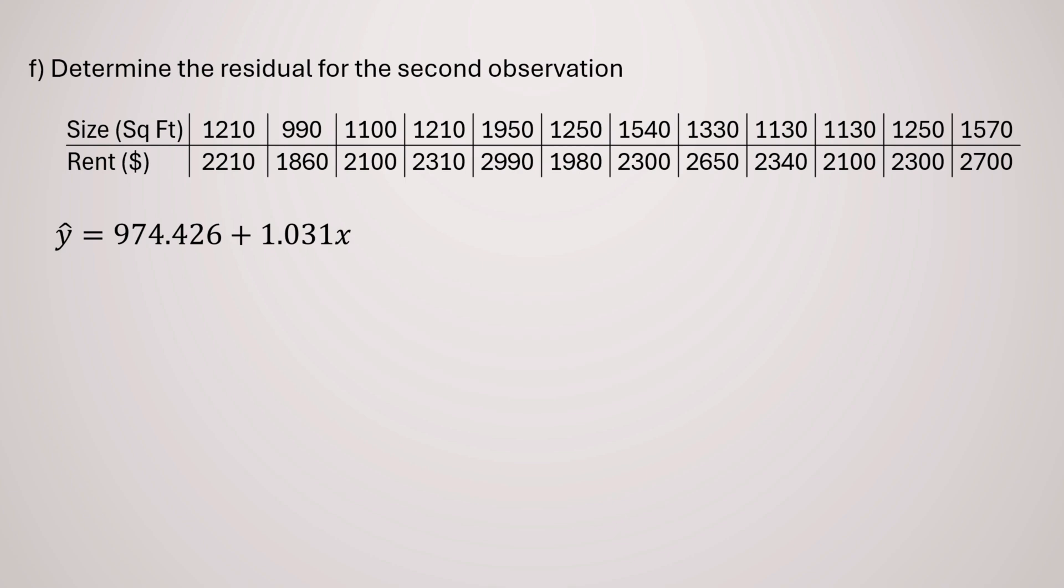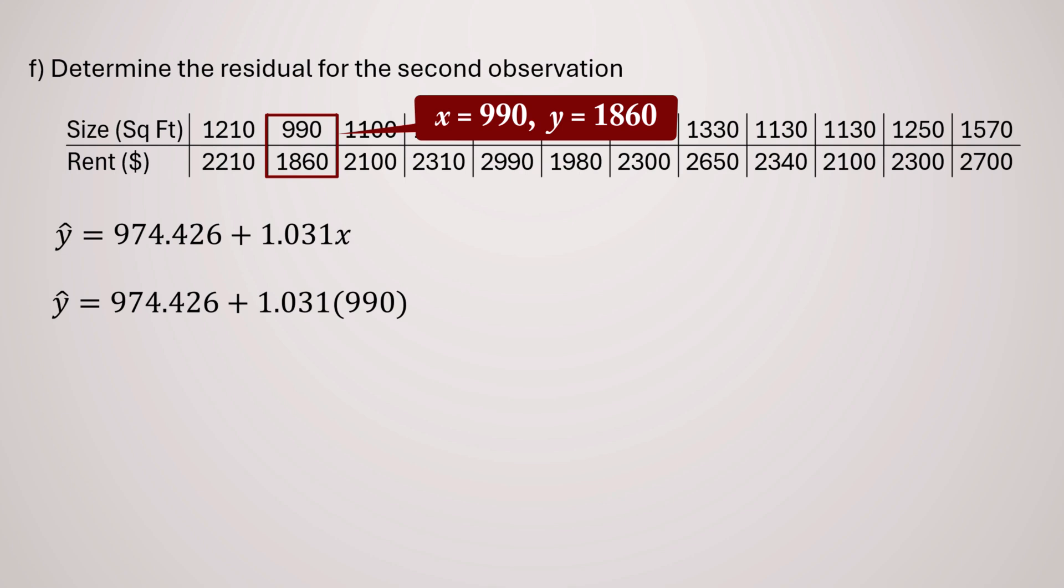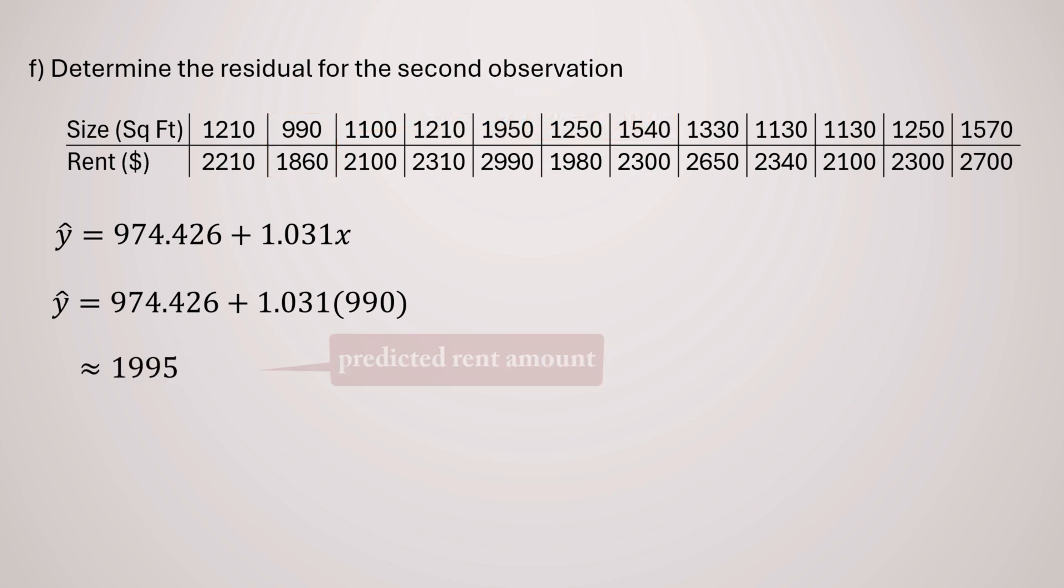Next, we calculate the residual for the second observation. Note that it has an X value of 990 and a Y value of 1860. Substituting X equals 990 into our regression equation, we obtain a predicted rent value Y hat of approximately 1995. Now to find the residual, we subtract the predicted value from the actual value. That's Y minus Y hat or 1860 minus 1995, giving us negative 135.